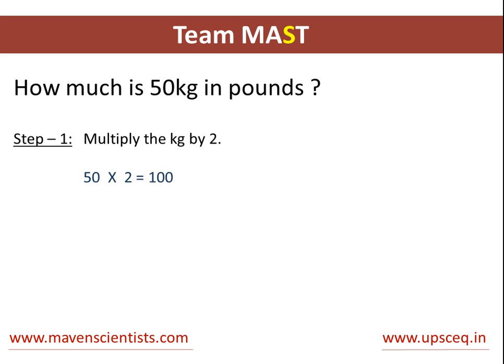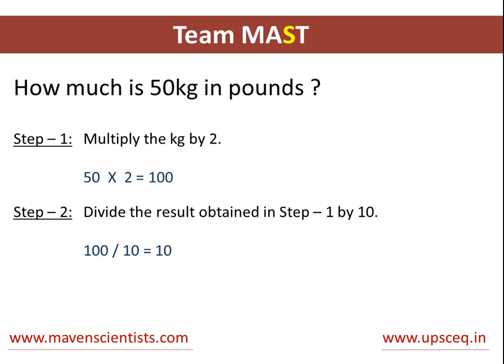The first step will be to multiply the number of kilograms by 2. So in this case we have 15, times 2 equals 30. The next step, you just divide the result obtained in step 1 by 10. So 30 divided by 10 gives you 3.